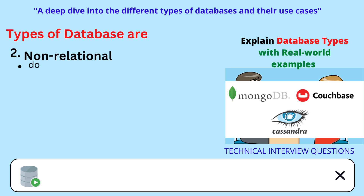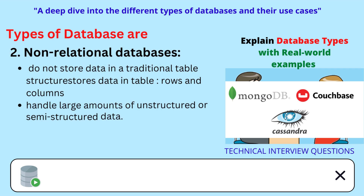Non-Relational Databases do not store data in a traditional table structure, and they are designed to handle large amounts of unstructured or semi-structured data. Examples of non-relational databases include MongoDB, Cassandra, and Couchbase.